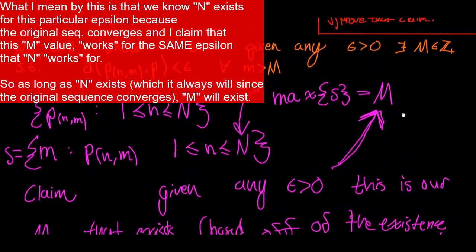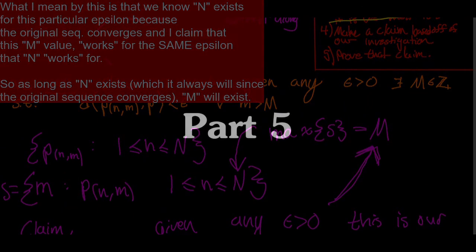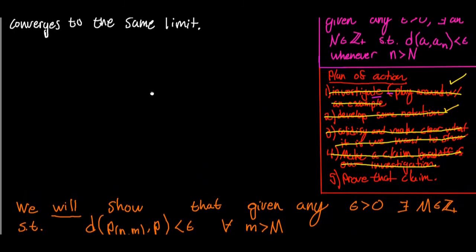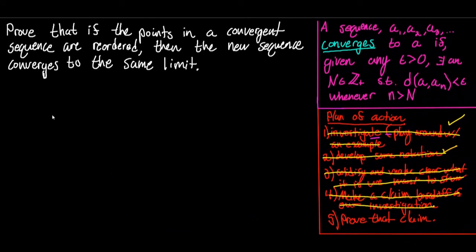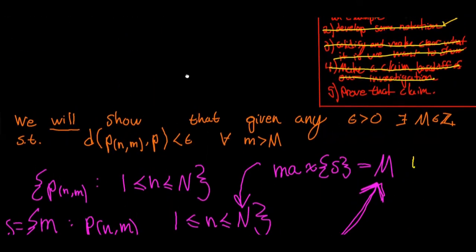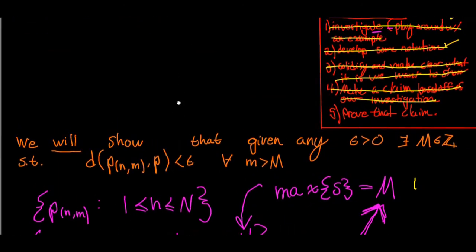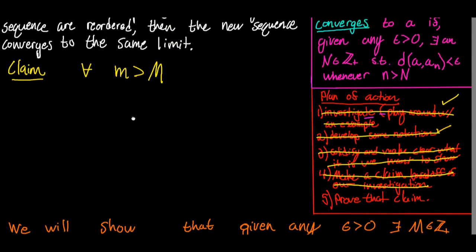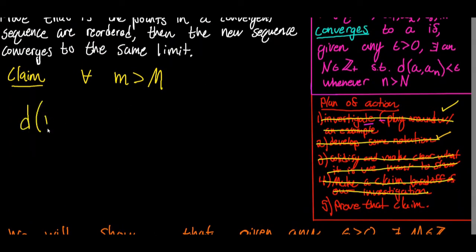Now let's rephrase our claim so that we're better able to prove it. Claim: for all m strictly greater than M — for this epsilon, the epsilon associated with this N value in the convergence of the original sequence — the distance between p sub (n, m) and p is strictly less than epsilon.